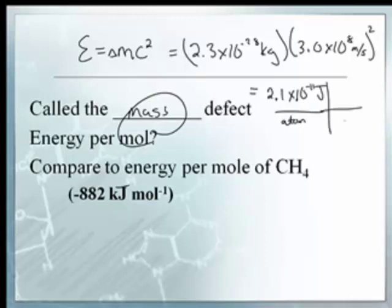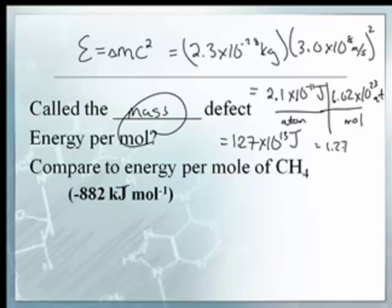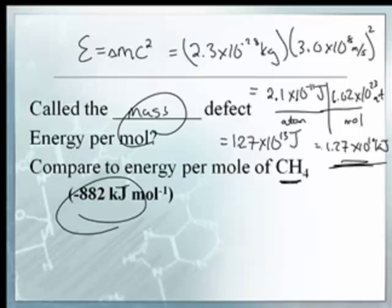So if we were to have a mole of those atoms, you would times this by 6.02 times 10 to the 23rd atoms in a mole. And you get 1.27 times 10 to the 13th joules. That's joules. And if we divide that by 1,000. 1.26 or 1.27 times 10 to the 10th. And that's kilojoules. Now the reason I do this. That's per mole. That's per mole. If you were to burn methane, this is natural gas that we get out of the ground. It's 882 kilojoules per mole. How much more would you get out of this?